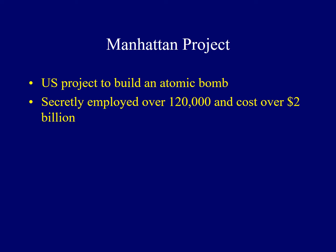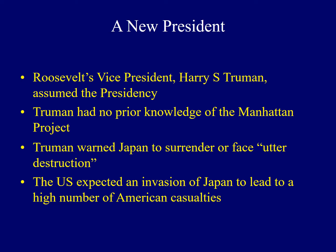The Manhattan Project was a secret U.S. project to build an atomic bomb. It employed over 120,000 people in various parts of the nation and cost taxpayers over $2 billion. Following the successful detonation of an atomic bomb in late July 1945, Harry Truman warned the Japanese to surrender or face utter destruction. The United States fully expected to invade Japan, and if that occurred, the expectation was that American casualties as well as Japanese casualties would be incredibly high.